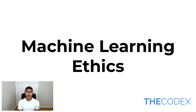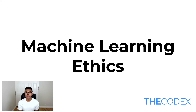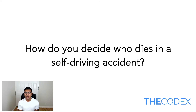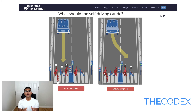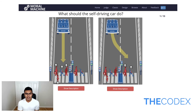So let's take a step back. As you grow as a machine learning developer, I really want you to consider the ethics of your machine learning algorithm, because at the end of the day, your algorithm has human lives at stake. How do you decide who decides in a self-driving accident? MIT has an amazing study on this — if you have some time, check out moralmachine.mit.edu. This website essentially asks you 13 questions on different situations involving a self-driving car.